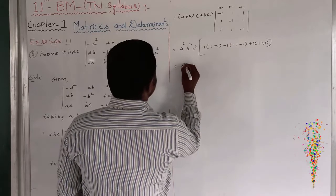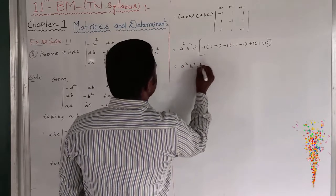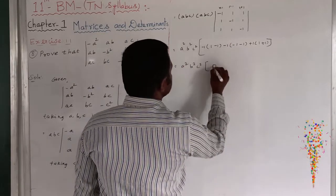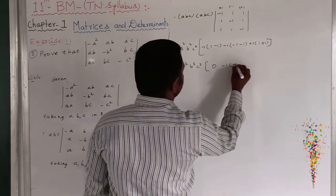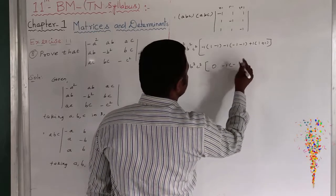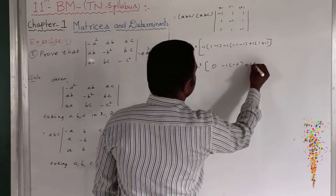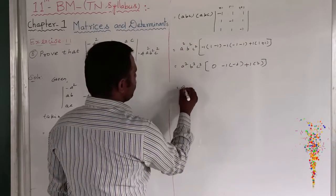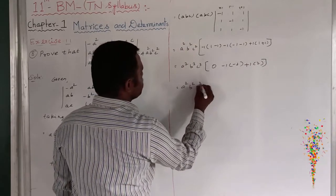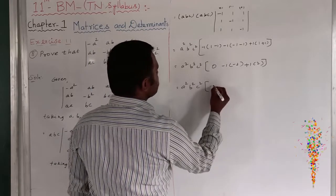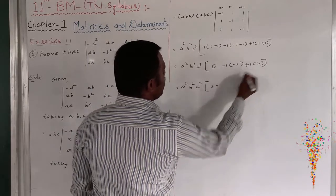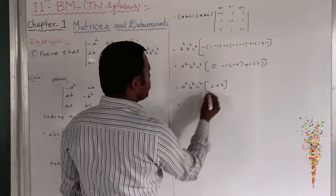Therefore, a squared, b squared, c squared times the determinant. This equals 0 minus 1 minus 1 minus 1, that is minus 2, plus 1. Here always 2, so therefore a squared, b squared, c squared. Minus into minus is plus 2, here always plus 2. 2 plus 2 equals 4.